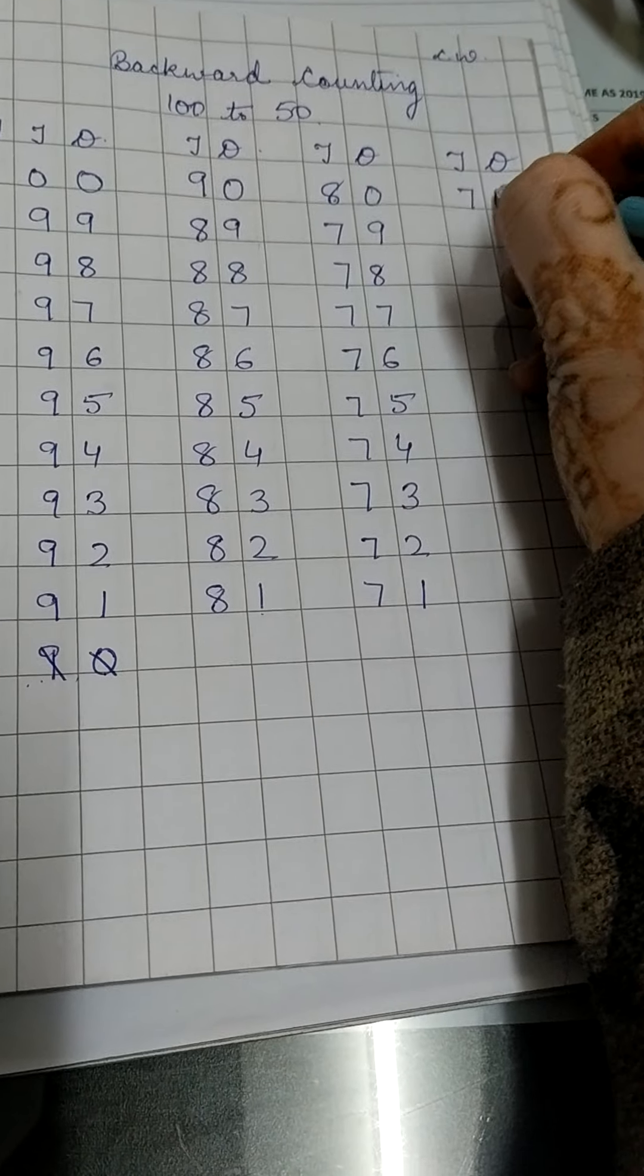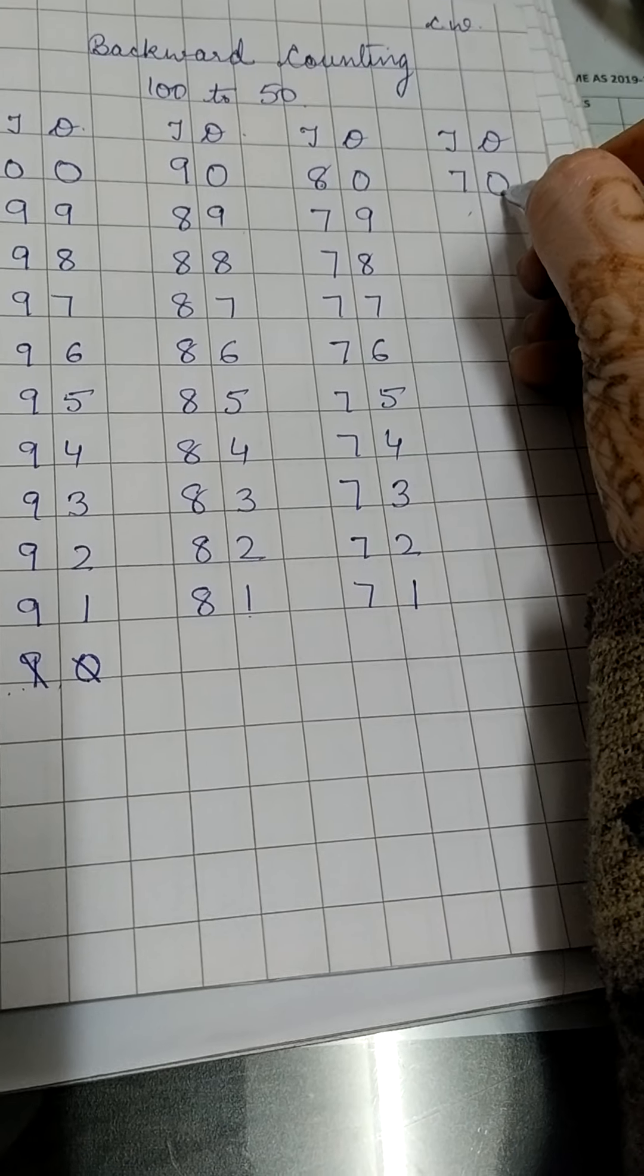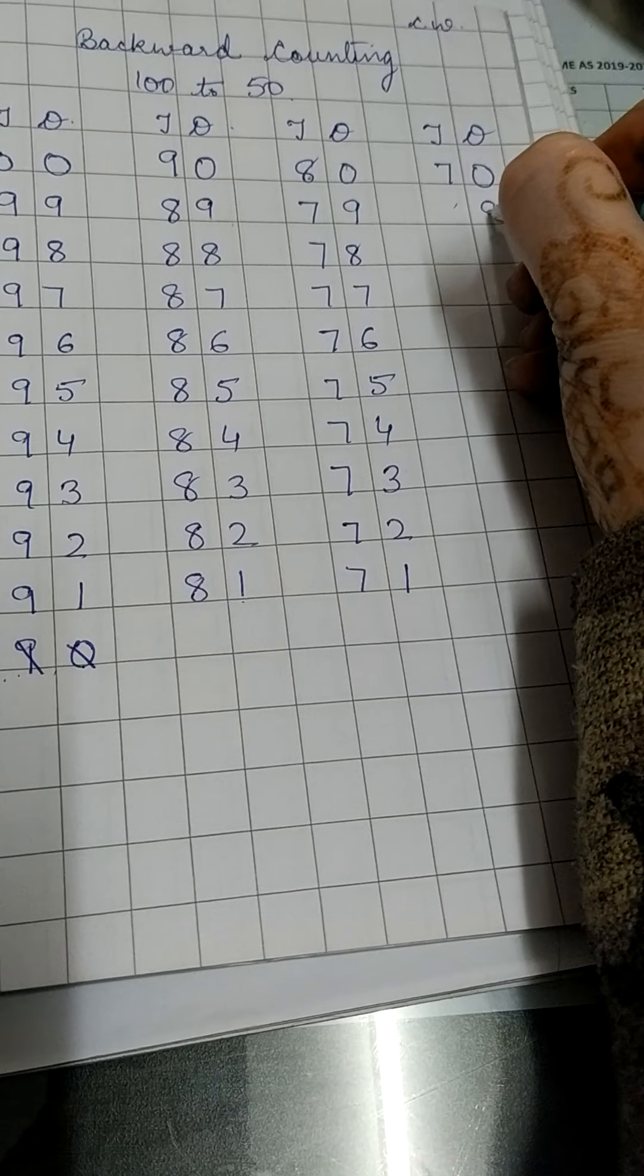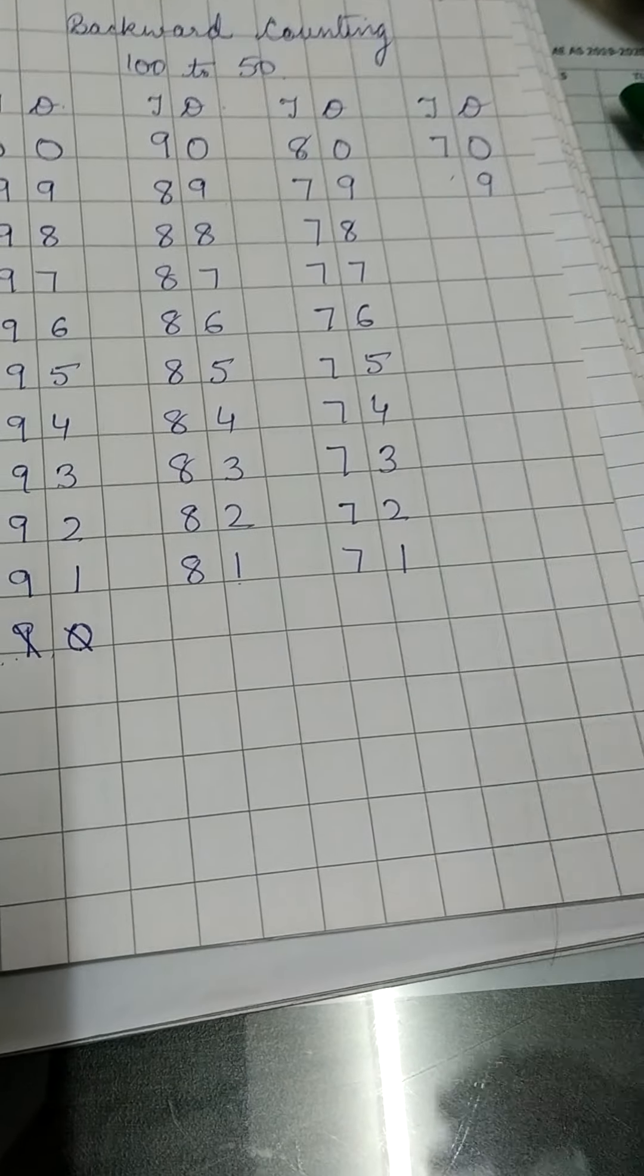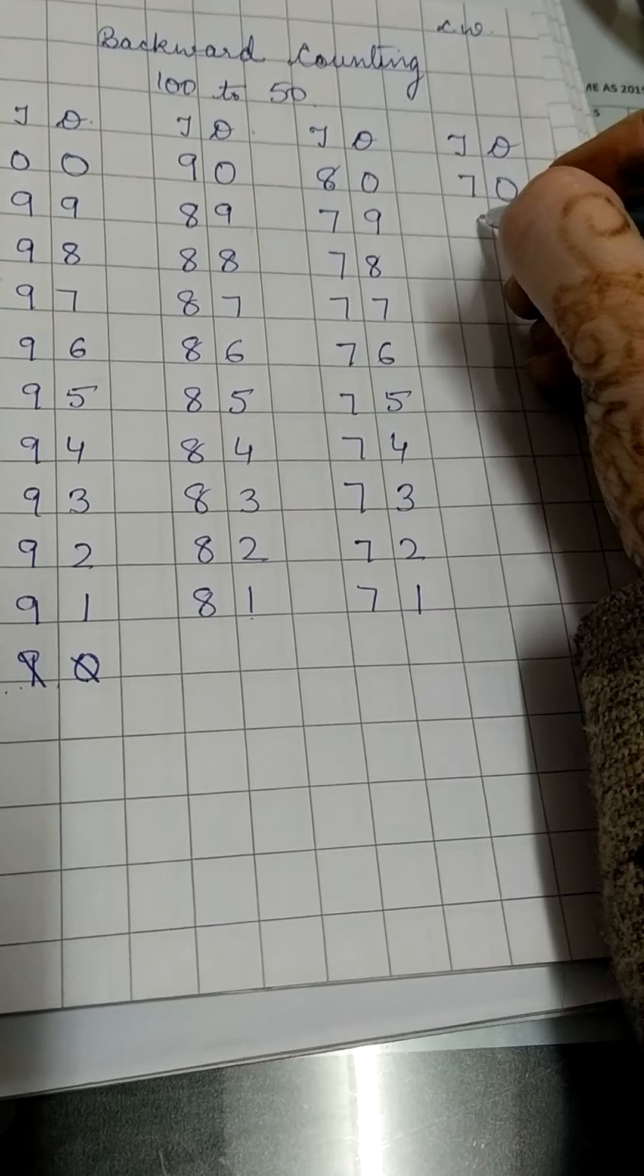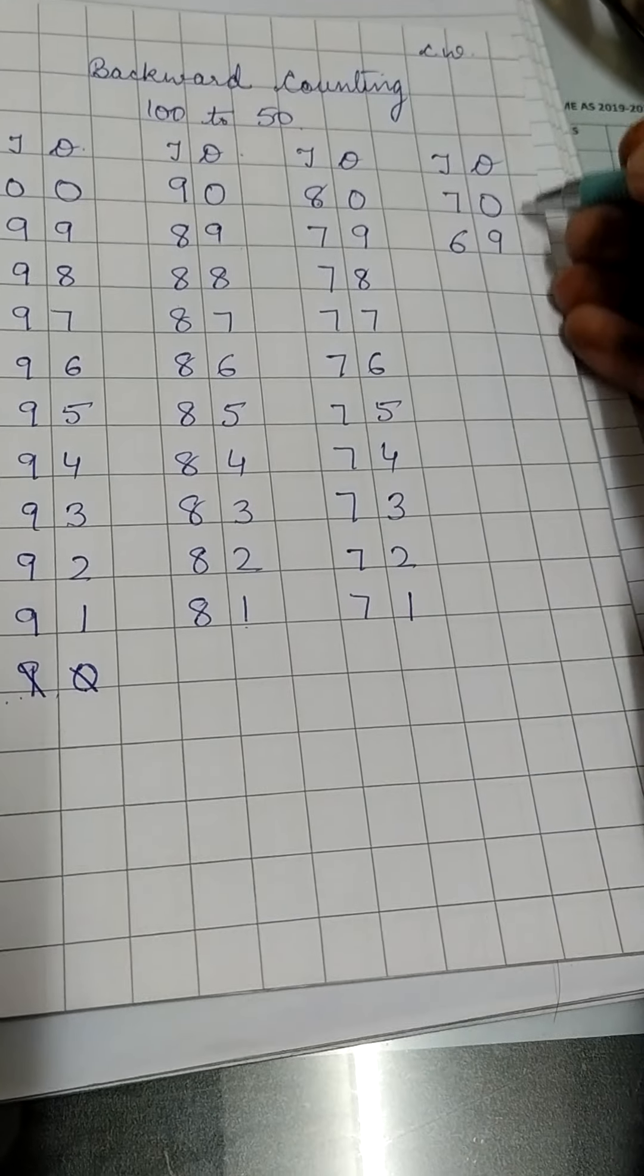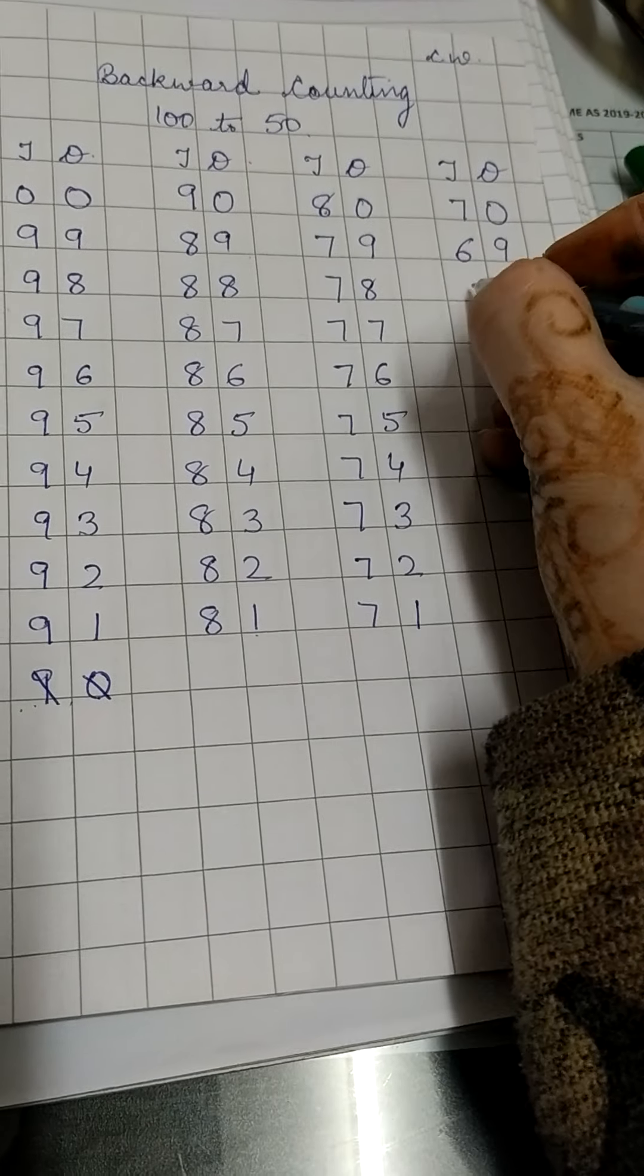What will come here? 70. So 70. Now again it is 0 here. So what will come here? 9. Why? Backward counting. Before 0 what comes before 0? 9. And before 7 what comes? 6. Now 6 will not change. Only the ones place will change. 69.